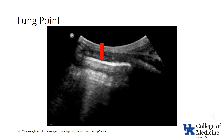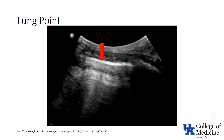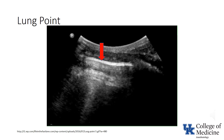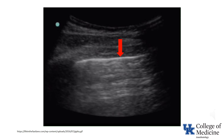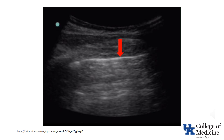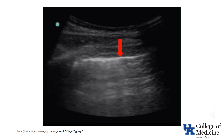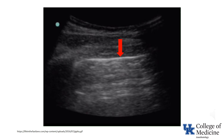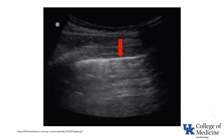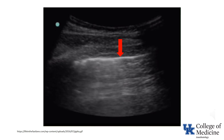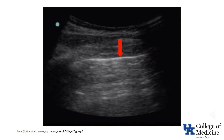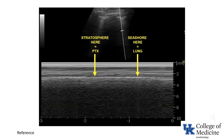This video demonstrates what's termed a lung point. Notice that no lung sliding is present to the left of the red arrow and that lung sliding is sometimes present to the right of the red arrow. A lung point identifies the point at which the visceral and parietal pleura becomes separated in a pneumothorax. When imaged in M-mode, a lung point presents as a seashore sign alternating with a barcode or stratosphere sign. The presence of a lung point is essentially pathognomonic for a pneumothorax.